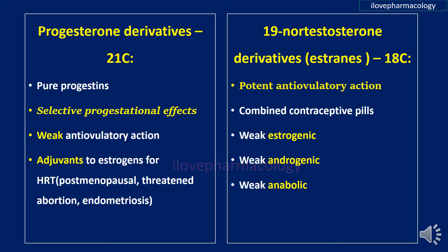Progesterone derivatives are basically used for treating postmenopausal hormonal imbalance, threatened abortion, and endometriosis. The 19-nortestosterone derivatives have potent anti-ovulatory action, making them suitable for use in combined contraceptive pills along with estrogen. Additionally, they have weak estrogenic, weak androgenic, and weak anabolic effects.